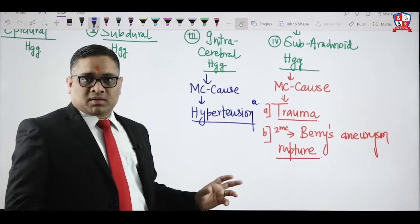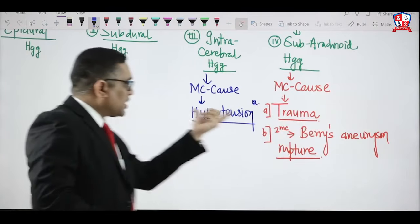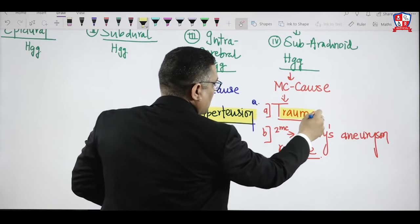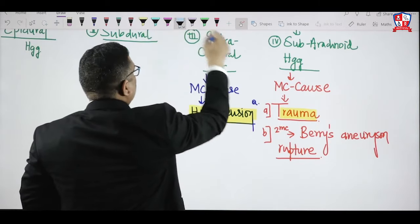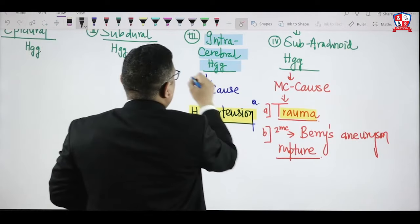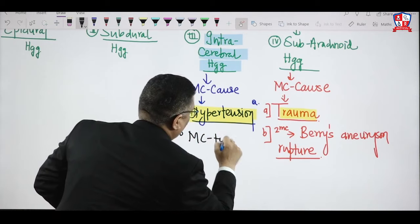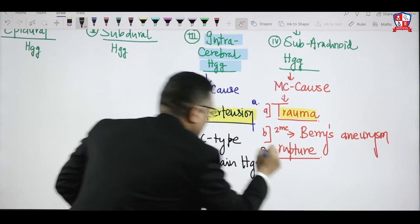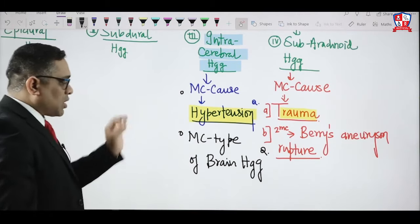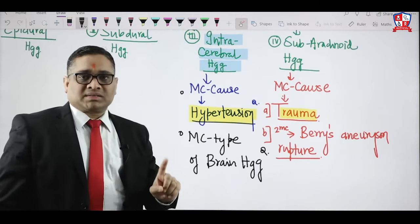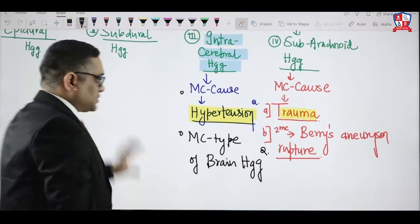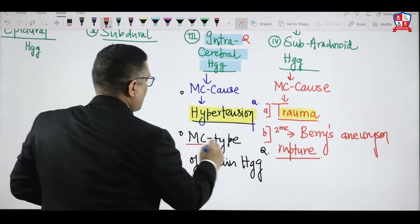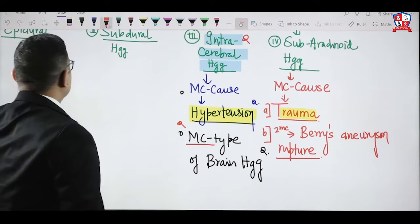Hypertension is more common than physical trauma. That is why, when the examiner asks what is the most common type of brain hemorrhage, intracerebral hemorrhage is the answer — because it is caused by hypertension. This was an All India question in 2015 and is a repeat question. The most common type of brain hemorrhage is intraparenchymal or intracerebral hemorrhage because of hypertension.